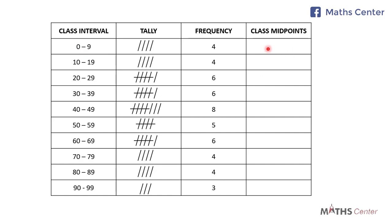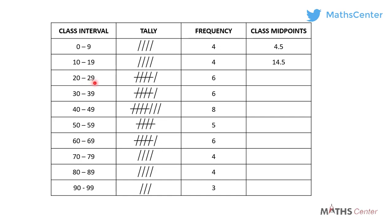We have learnt that you get the class midpoint by adding the lower class limit to the upper class limit and then dividing the result by 2. So for the first one: 0 plus 9 divided by 2 gives us 4.5. The next one, 10 plus 19 divided by 2, gives us 14.5. Then 20 plus 29 divided by 2 gives us 24.5, and 30 plus 39 divided by 2 gives us 34.5.